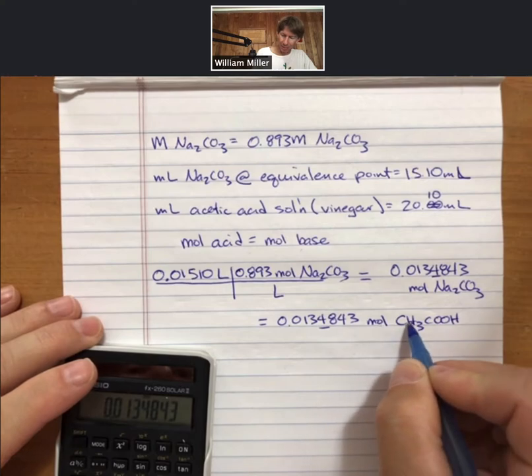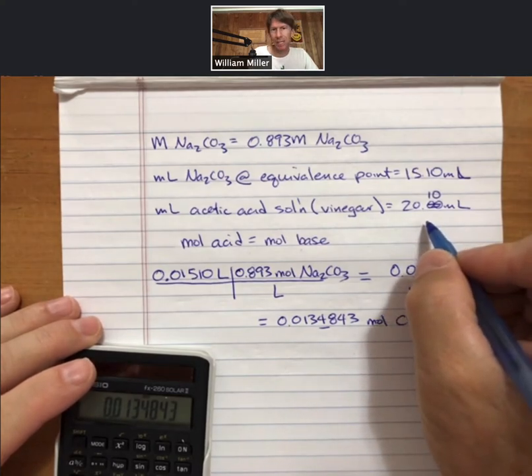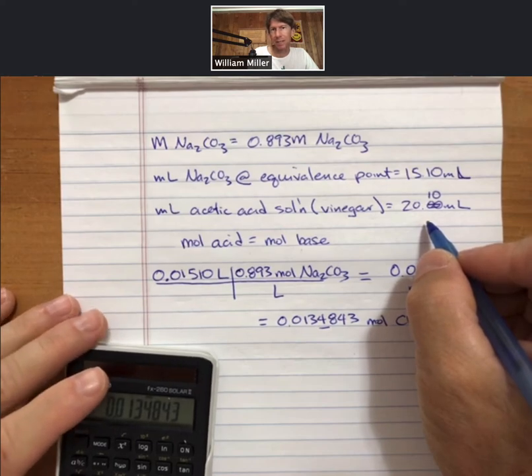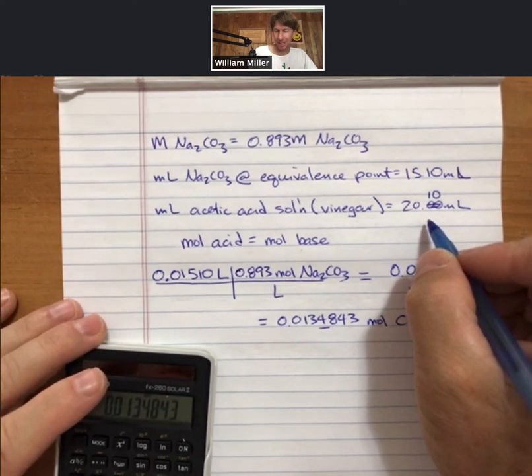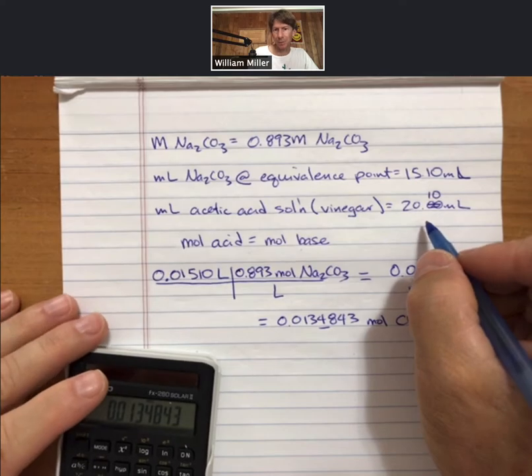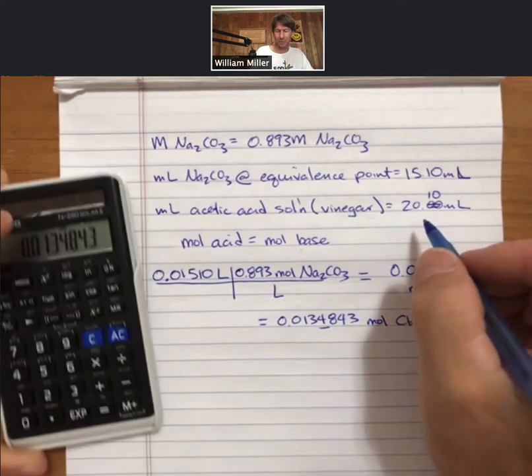Now, because I have the moles of acetic acid and I have the volume of acetic acid, I can now find the molarity of the acetic acid by taking moles divided by volume in liters.